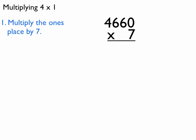Same pattern, just a little bit longer. Multiply the ones place by 7. 0 times 7 is just 0. There's nothing to regroup, so I move on to the next one.